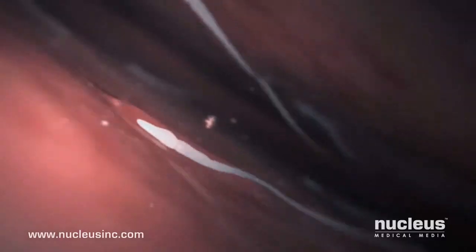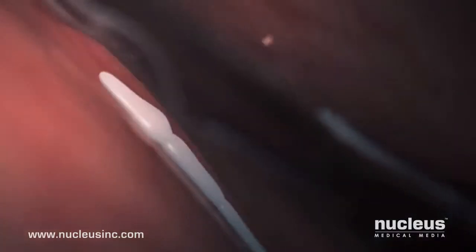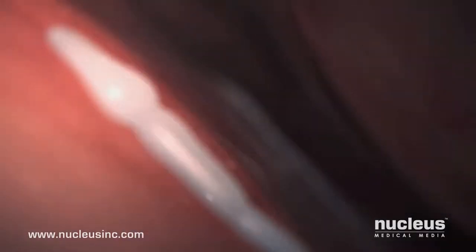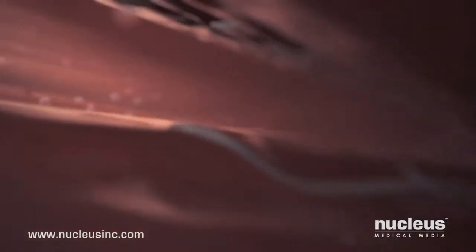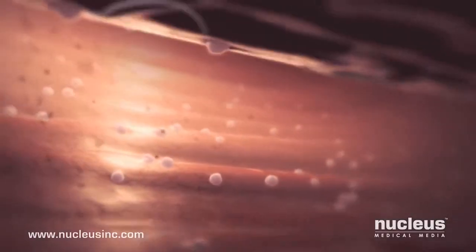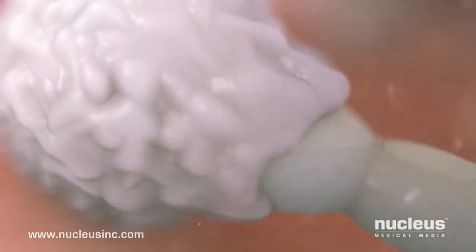Inside the uterus, muscular uterine contractions assist the sperm on their journey toward the egg. However, resident cells from the woman's immune system, mistaking the sperm for foreign invaders, destroy thousands more.